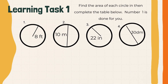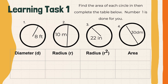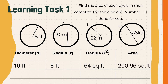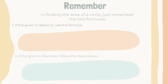From Learning Task 1, find the area of each circle and complete the table below. Number 1 is done for you. The given is a radius of 8 feet. So the diameter is double 8 feet, which equals 16 feet. The radius squared is 8 times 8 equals 64 square feet. Therefore, the area is 200.96 square feet. Items 2, 3, and 4 — answer in your paper.